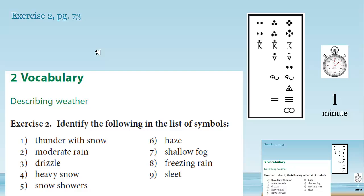You've got one minute. You need to identify these types of weather with these symbols. Of course there are nine different types of weather here, and I've got more than nine symbols, so you've got to pick out the right symbol. Use a pencil, because I'm not guaranteed you're going to get it right the first time. That's why we're doing this — to learn. We'll give you the answers in one minute.